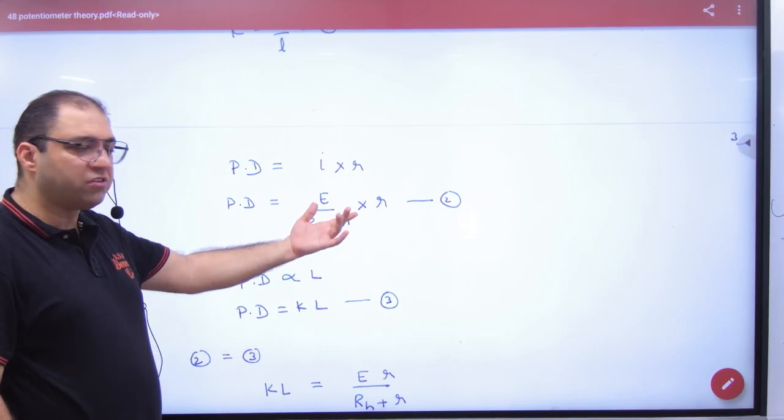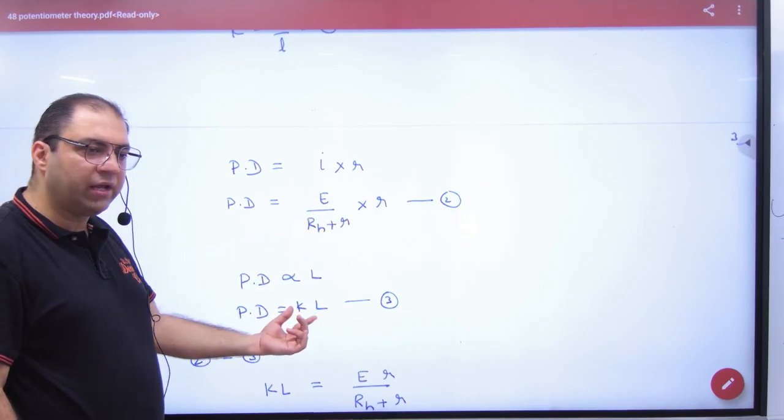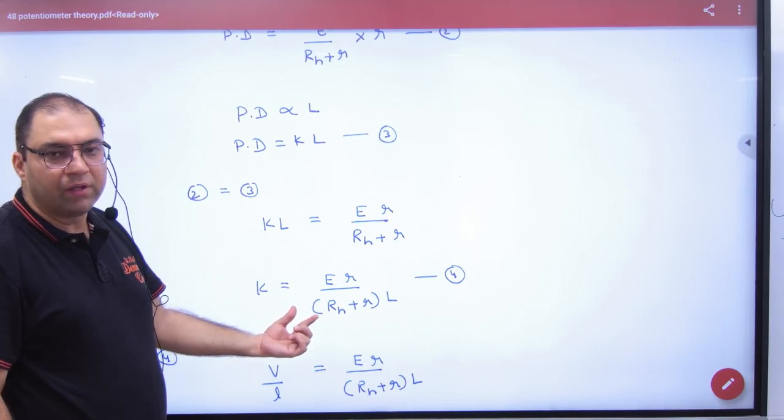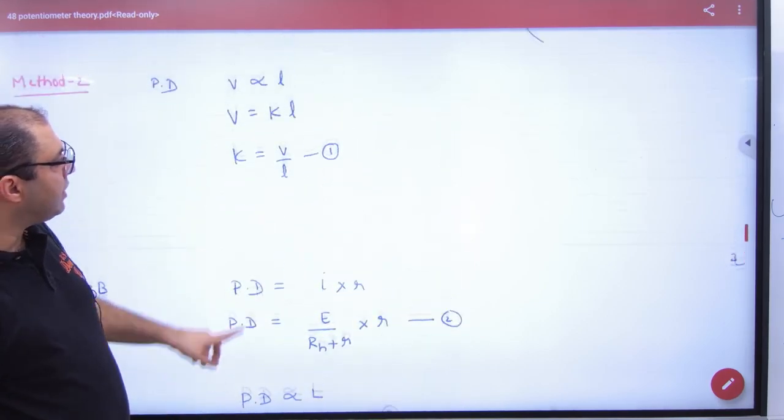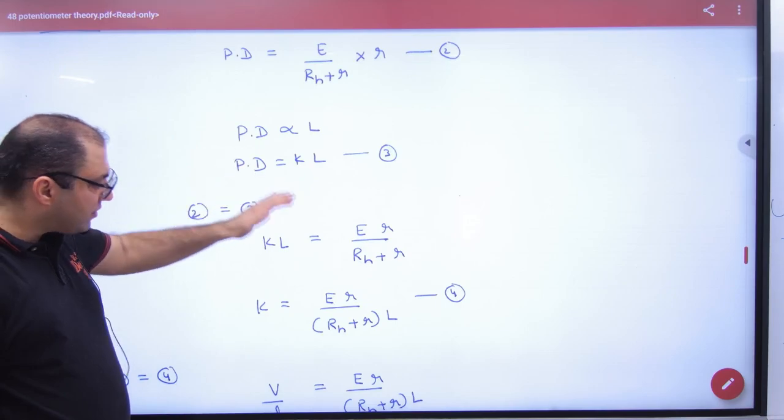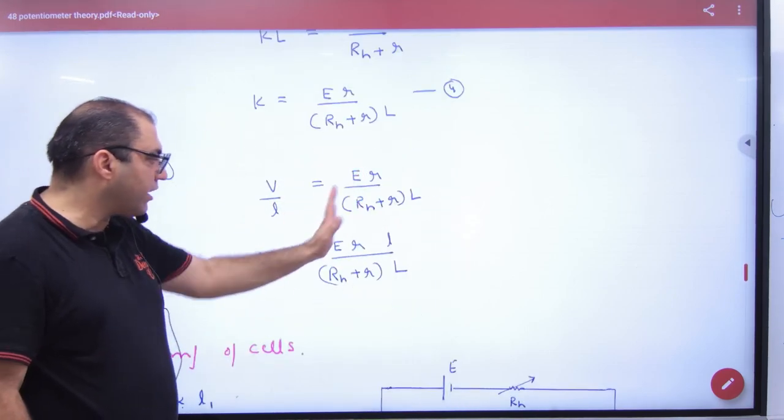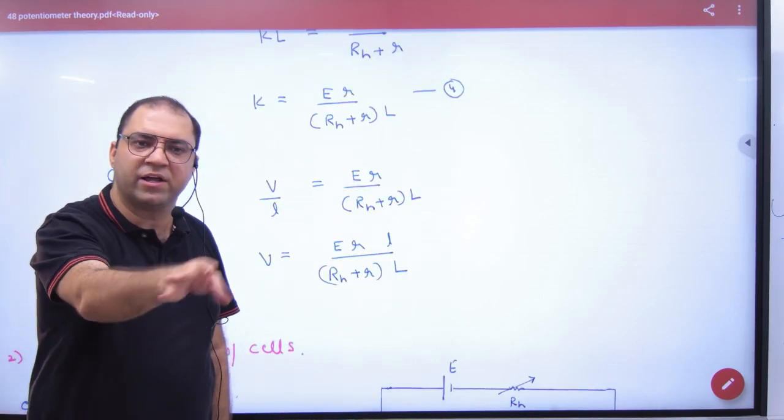The potential difference is removed from Ohm's law and also from the potentiometer principle. Equate these expressions to find K. Then substitute K value from equation number one to get the same answer as method number one.